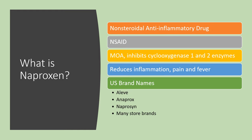What is naproxen? It is a non-steroidal anti-inflammatory drug, or NSAID. The mechanism of action inhibits an enzyme called cyclooxygenase 1 and 2, sometimes abbreviated COX-1 and COX-2. When you inhibit those enzymes, we get a reduction in inflammation in the body that helps with pain and also reduces fever. Some of the brand names in the U.S. include the over-the-counter version Aleve, Anaproxen, and Naproxen. Most stores have their store-branded generic. You just need to look at the active ingredients and see that it's naproxen.